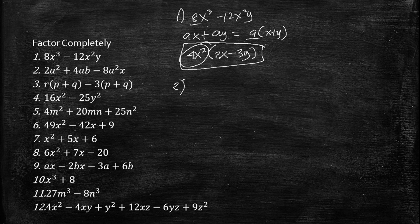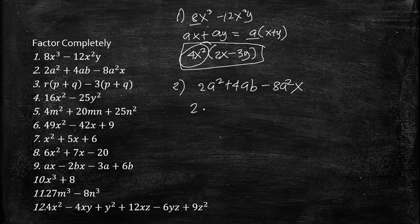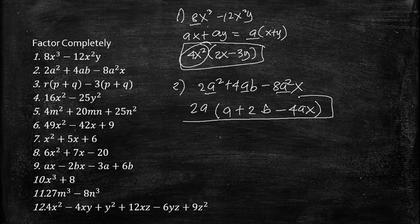Number 2 also uses common factors. We have 2a² + 4ab − 8ax. The common factor of every term is 2a, so the factored form is 2a(a + 2b − 4x).